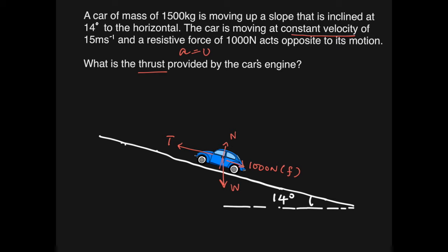Now what we can do is resolve the weight into two components. Remember the weight is acting vertically downwards, but there will be a component of the weight along the slope. So if you resolve the weight into two components, one perpendicular to the slope and another parallel to the slope, we have these two components.